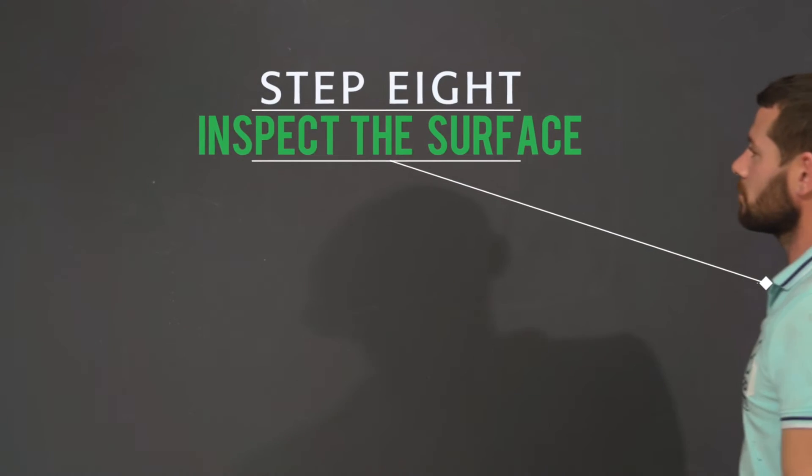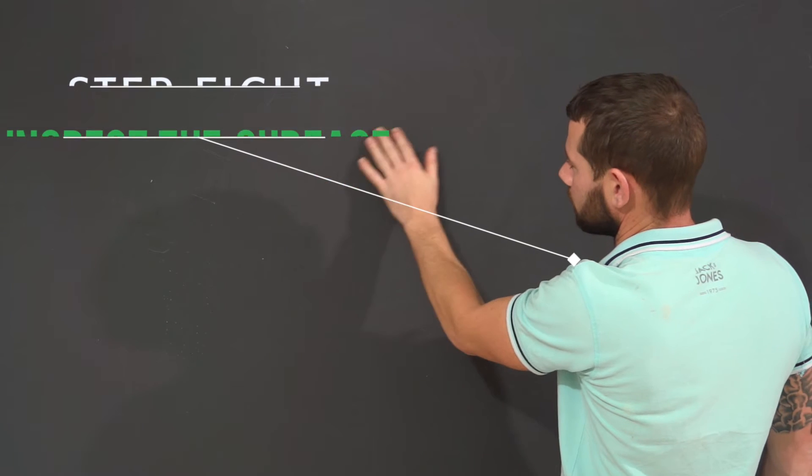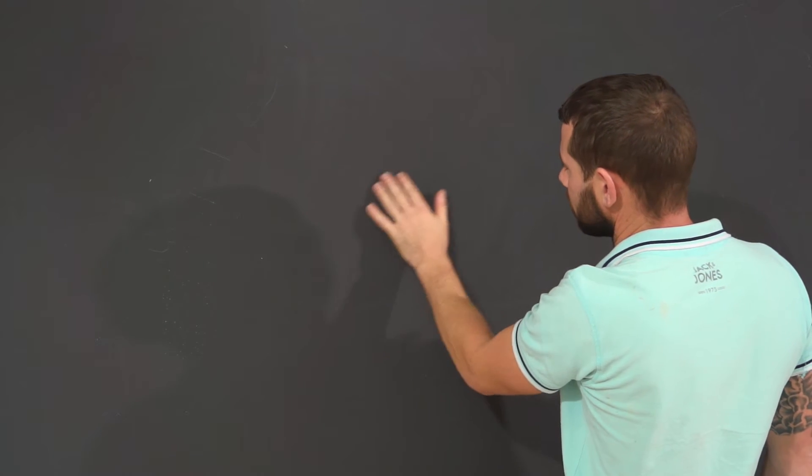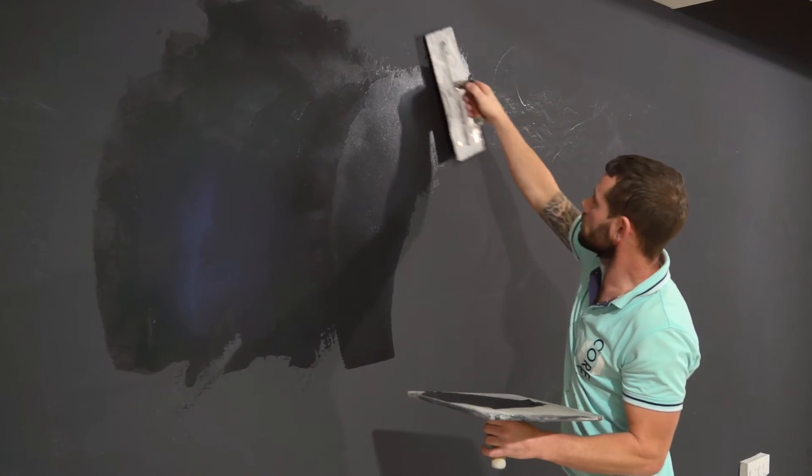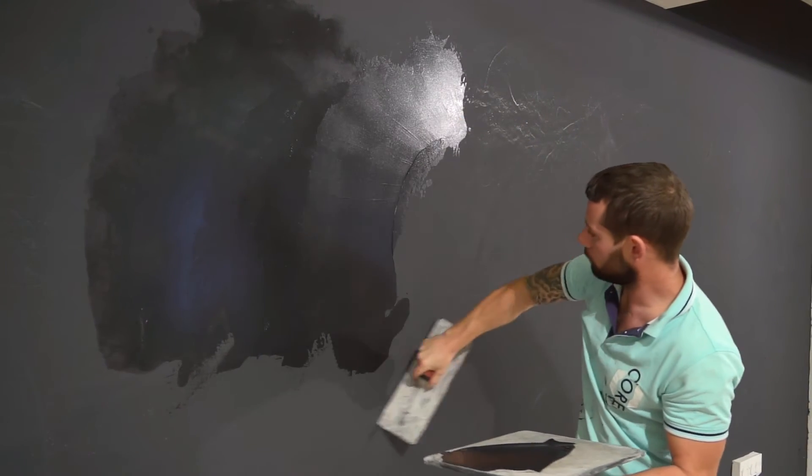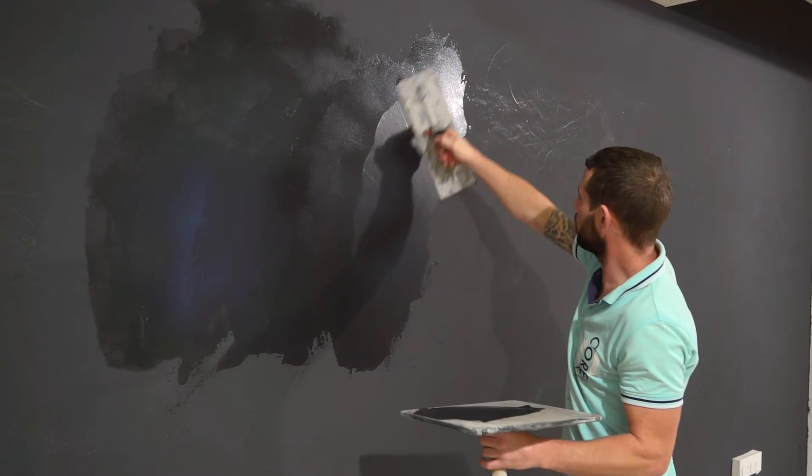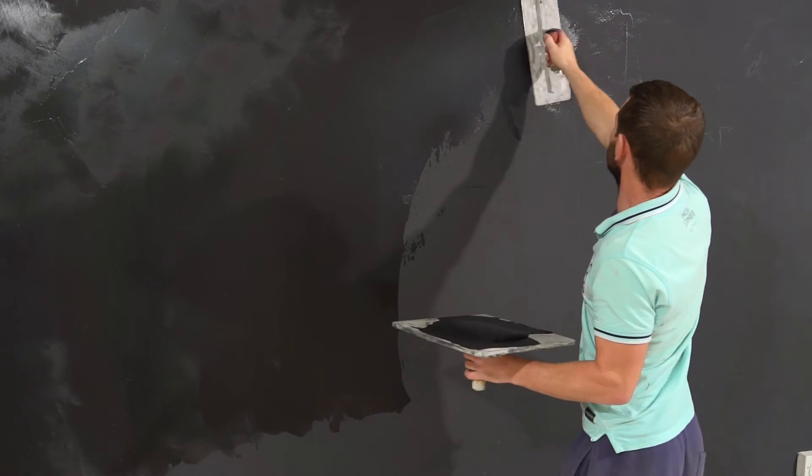Step 8: Inspect the surface. Check if your surface is uneven or has any imperfections after the second coat of plaster has dried. If so, apply a thin layer of plaster and lightly skim it over the surface with a smooth edge trowel to ensure an even smooth surface.